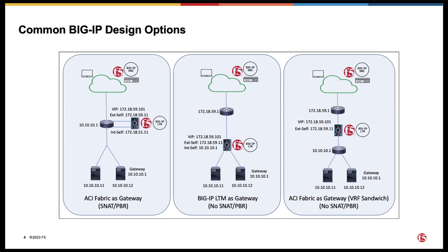Before we look at each design option, we would like to highlight the Big IP DNS deployment option first. It is very typical to deploy a standalone Big IP DNS behind Layer 3 in ACI multi-site or multi-pod, which you can see from each design option here. A standalone Big IP DNS is a Big IP with only the DNS module deployed on an individual Big IP. Big IP DNS is typically deployed as a shared resource among multiple tenants, whereas Big IP LTM is typically deployed for a single tenant.